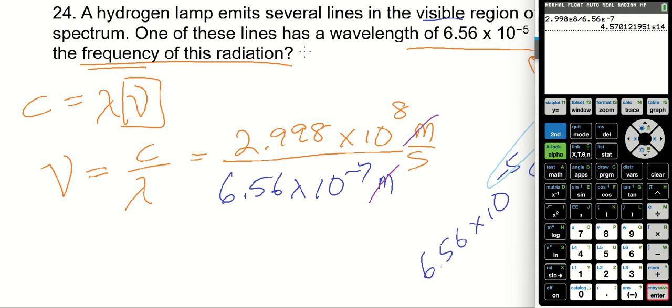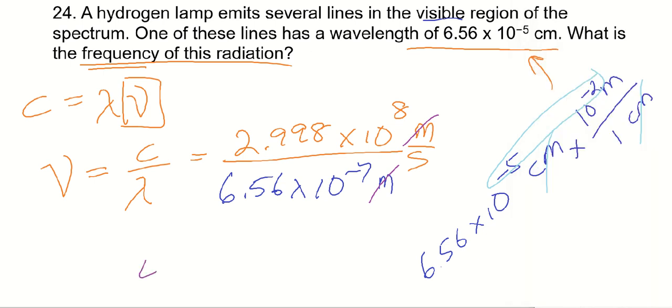The wavelength that it originally gave us had three significant figures. So our answer, our calculated answer has to have 3 as well. That's going to be the 4, the 5, and the 7. So, the answer is 4.57 times